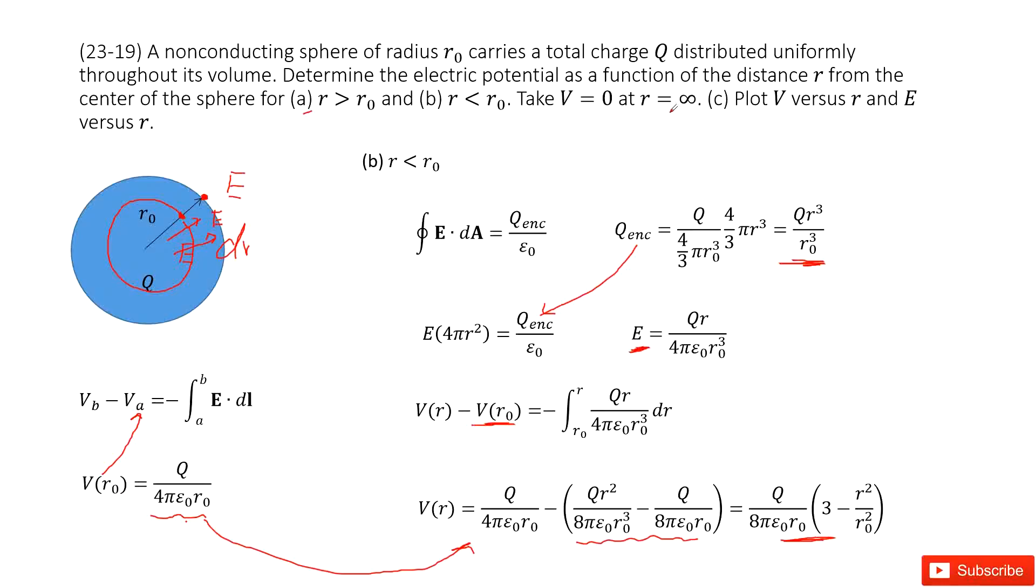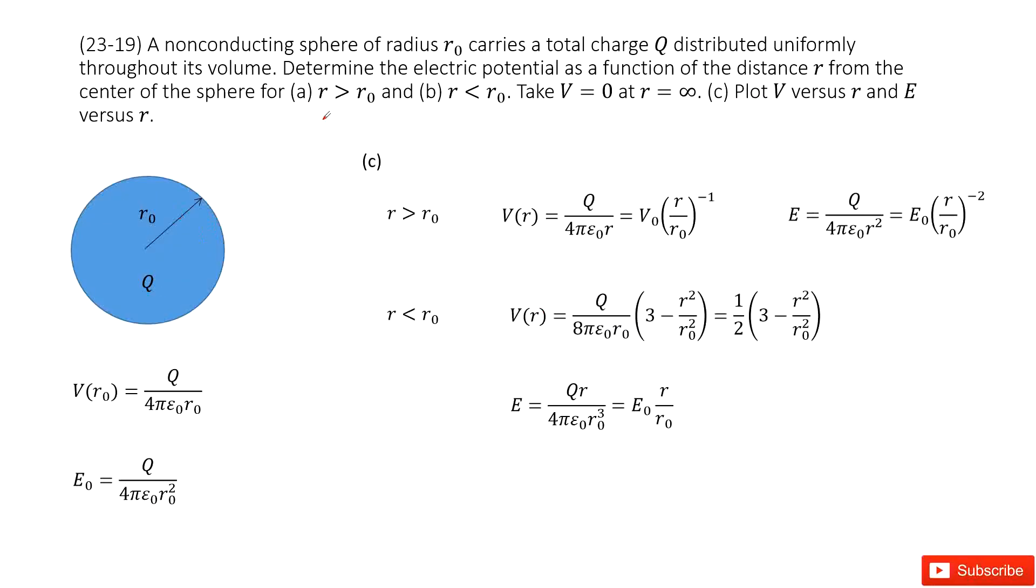The last one asks you to plot V versus r and E versus r. So we can write down what we have. This is V(r) and this is E(r) for r larger than r0. V(r) and E for r smaller than r0. You can see, if you write this function, it looks a little bit complicated, but we can simplify it.